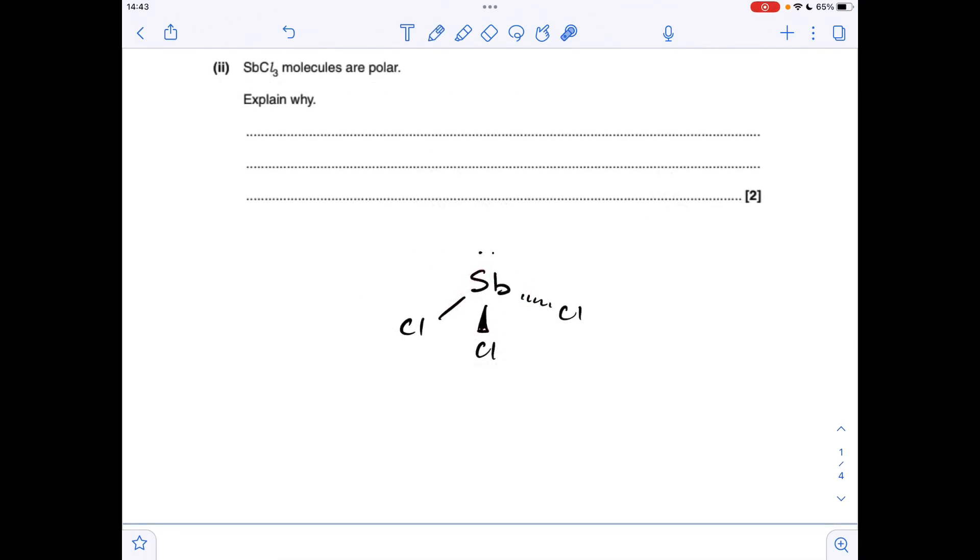Moving on to the next part, so why is this molecule polar? Well, it's down to the fact that the molecule is not symmetrical, so the dipoles in the bonds don't cancel. If that had been a bond to a Cl there, where the lone pair is, then it would have been symmetrical, the dipoles would have cancelled, and the molecule wouldn't have been polar.